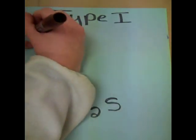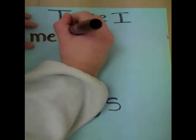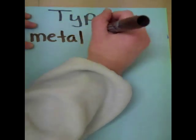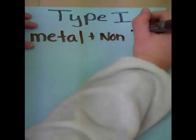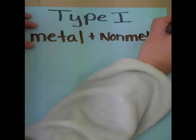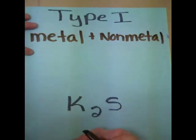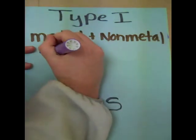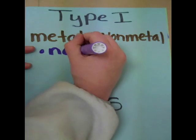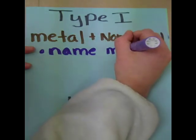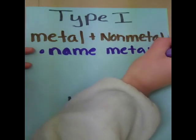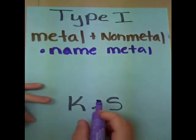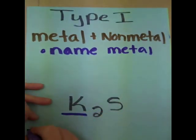Type 1 is your metal and non-metal with fixed oxidation states. To name these, you will first name your metal. As in down here, your metal is potassium, so you just start by saying potassium.